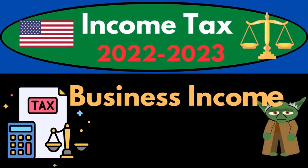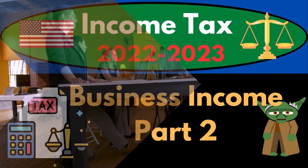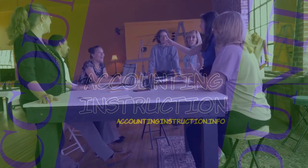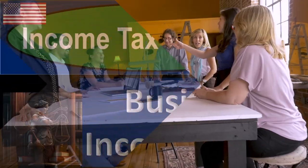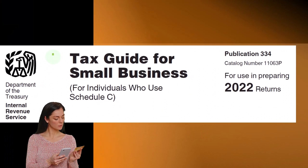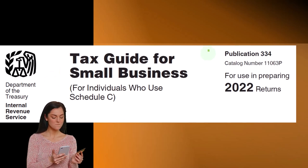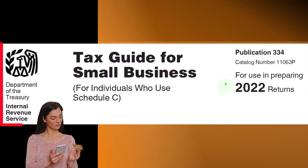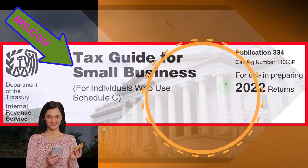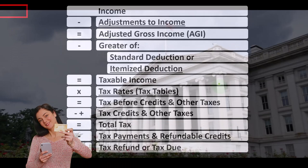Income Tax 2022-2023, Business Income Part Number 2. Let's do some wealth preservation with some tax preparation. Most of this information comes from the Tax Guide for Small Business for Individuals Who Use Schedule C, Publication 334, Tax Year 2022. You can find it on the IRS website, irs.gov. Looking at the Income Tax Formula, we're focused on Line 1 Income.